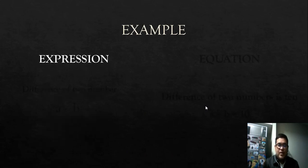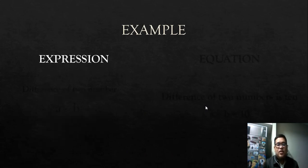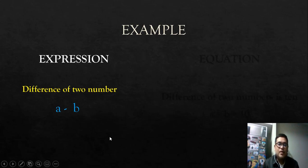Example of an expression: difference of two numbers. So that means we're talking about two numbers. a is the first number, b is the second number. When we speak of difference of two numbers, that means the operation is minus. So therefore, a minus b.